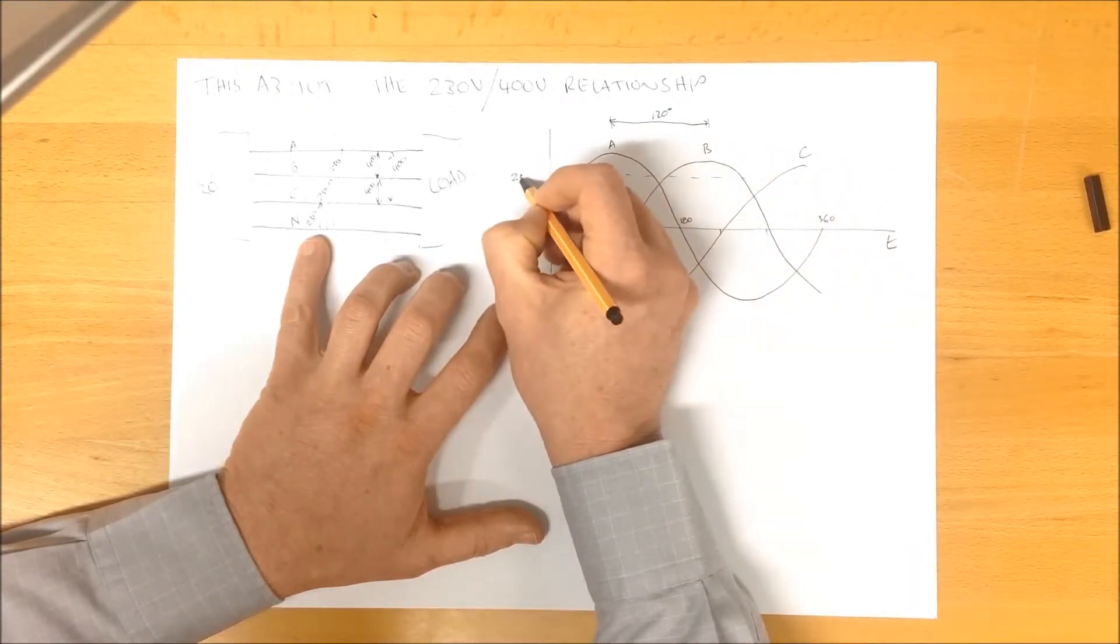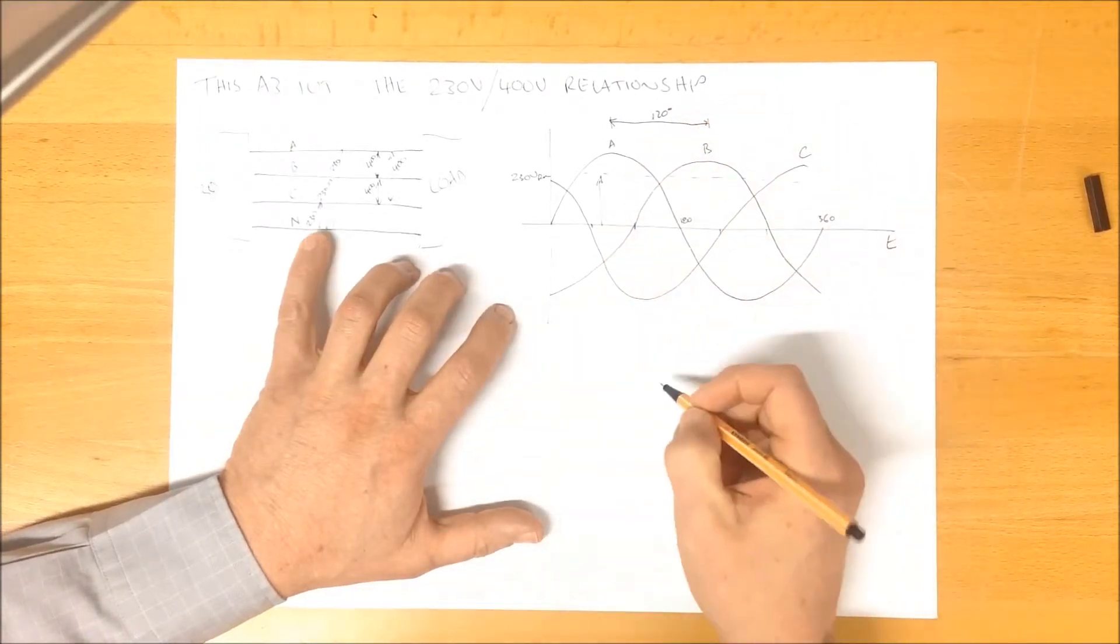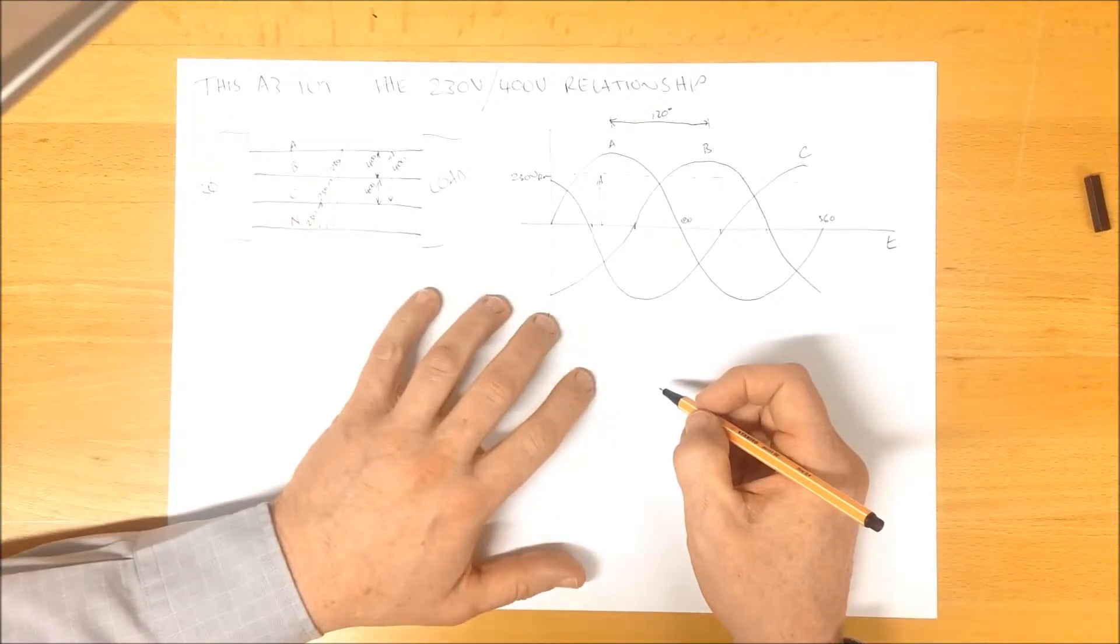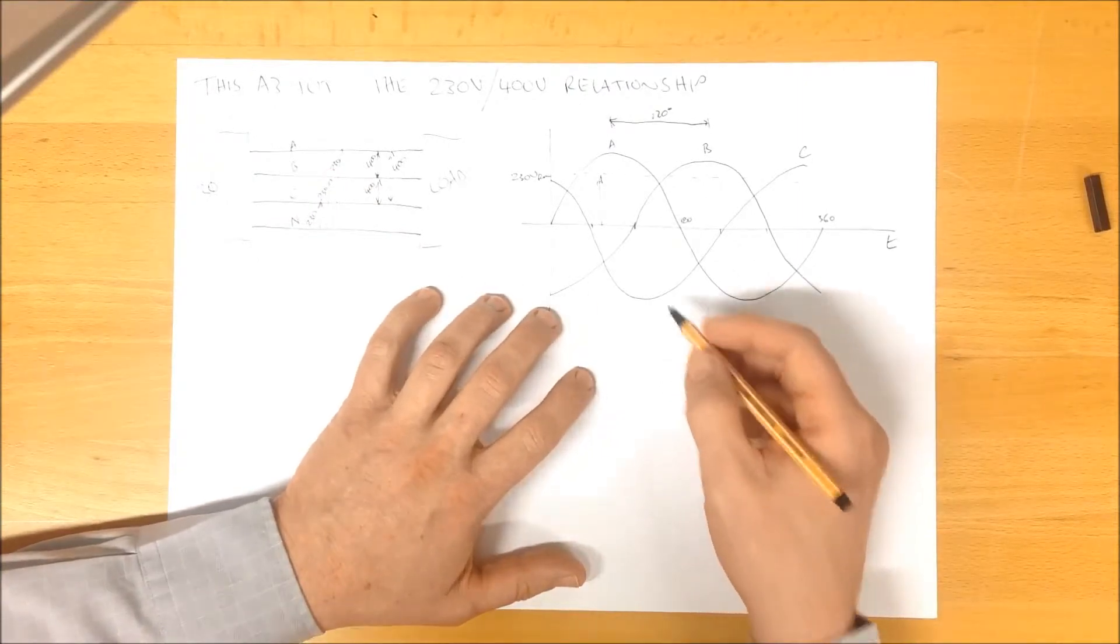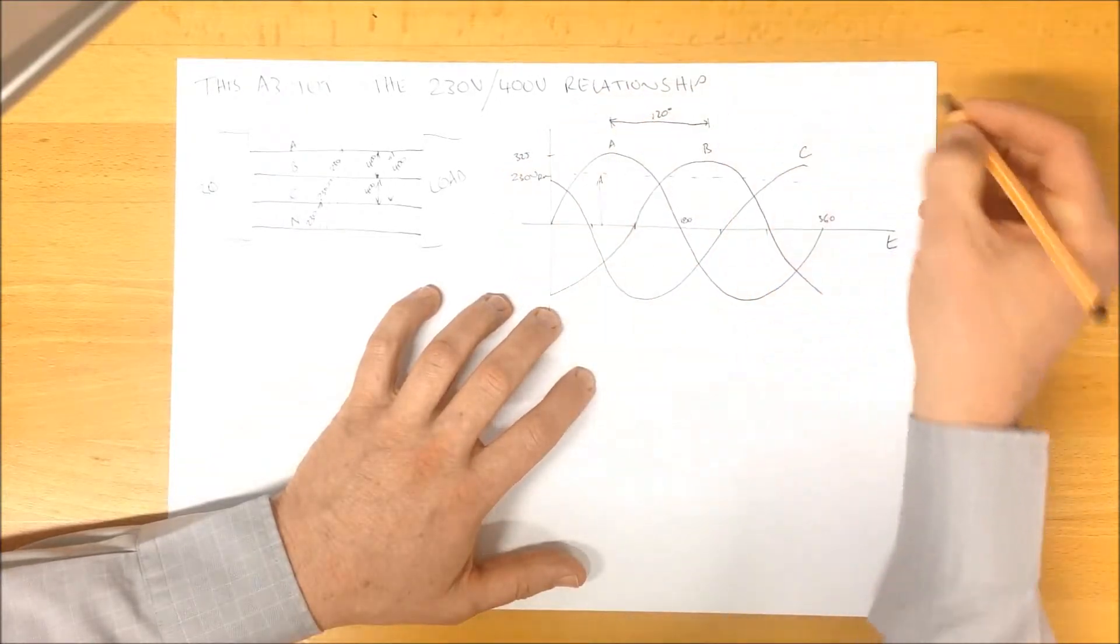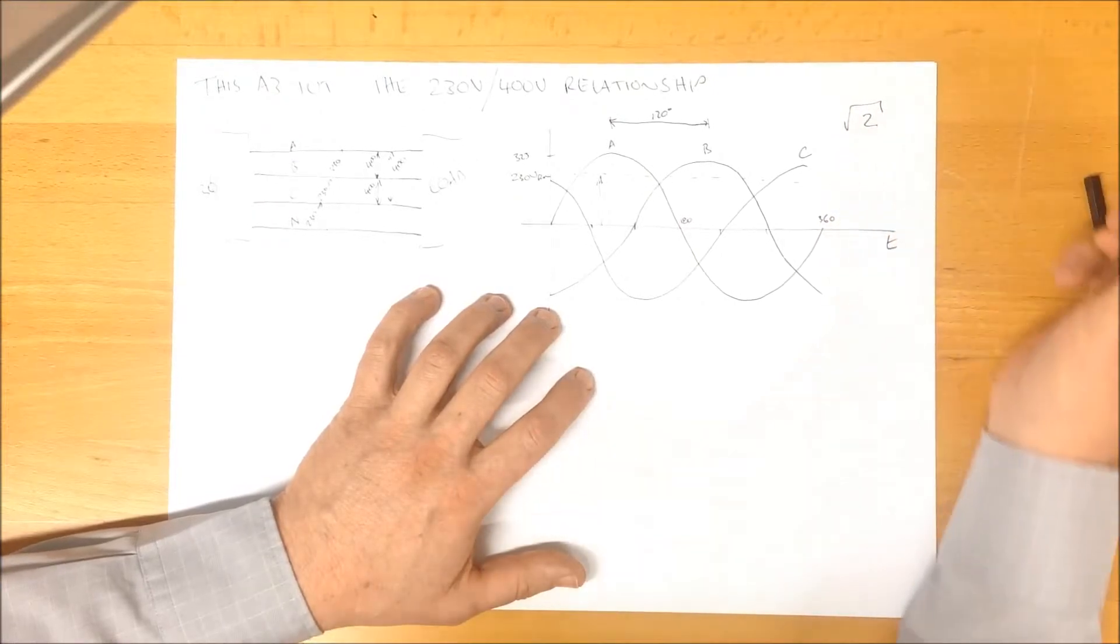And that would be our 230 volts RMS and that's what we'd measure here. If we were to configure that measure to measure the peak voltage, then we'd be measuring 325 here. Because the relationship between the RMS and the peak is a relationship of root 2.